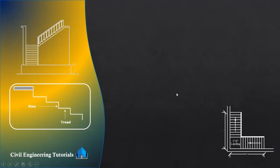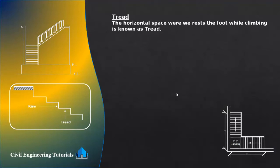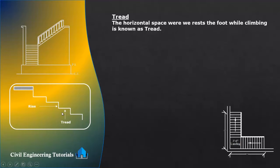First of all, what is a tread? The horizontal space where we rest the foot while climbing is known as a tread. From the top view we can see treads. The horizontal line is the tread and the vertical line is the riser.